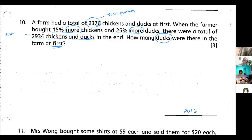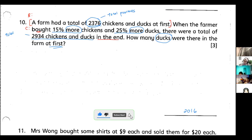We can identify the BCA very easily. From the question, 'at first' tells me there is something going on in the story. Yes — the farmer bought more chickens and more ducks. That is the change. The word 'bought' tells me this is my Change. The first sentence is my Before, and the phrase 'in the end' tells me this is my After. I have my BCA already.